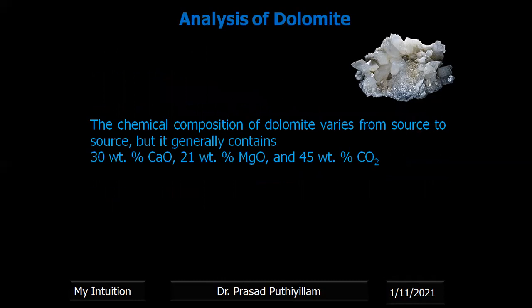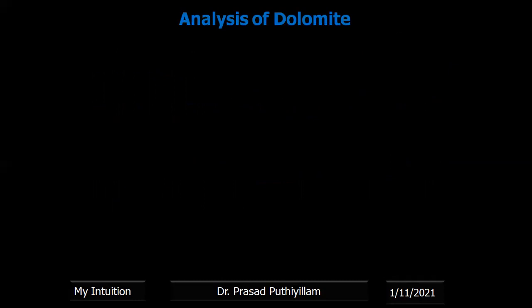It is also used in marine aquariums or saltwater aquariums to maintain the pH of the solution. The chemical composition of dolomite varies from source to source, but generally it consists of 30 weight percent calcium oxide, 21 weight percent magnesium oxide, and 45 weight percent carbon dioxide.